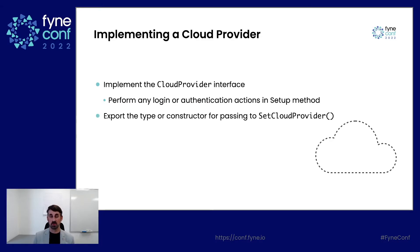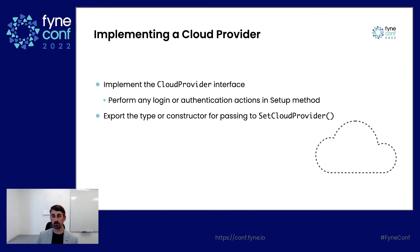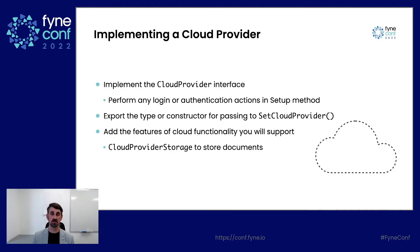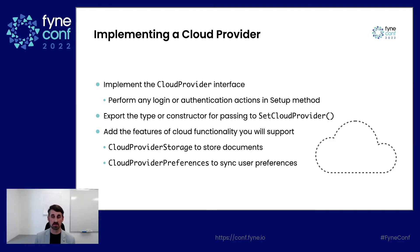Obviously, we want to export that type or provide a constructor so that, like in the illustration of the previous diagram, somebody can then pass that into Set Cloud Provider so that their application is ready to run with your implementation. And then we add the actual functionality for delivering cloud elements. There are two main areas at this time. Cloud Provider Storage is an interface that defines how you can store documents — larger items from the storage system. And we have Cloud Provider Preferences, which is used to synchronize user preferences. That's just a quick overview; there will be more details to follow on how some of this is implemented.